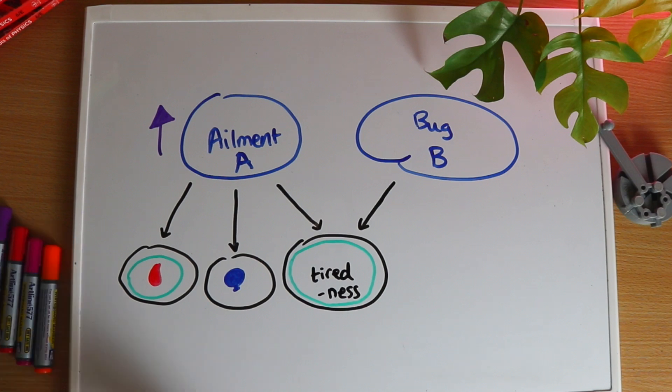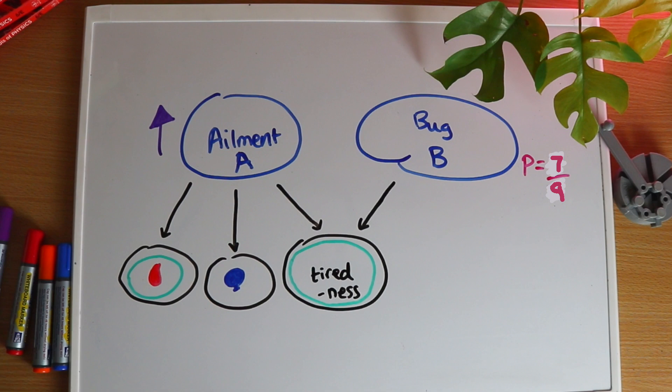Here's a tough question though. Because this patient was tired, we found the probability of them having B to be 7 over 9. Now that we know that they also have this symptom of A, and the probability of A has gone up as a result, does that change the probability of B again? Feel free to pause the video and really think about this, because it's a tough question.